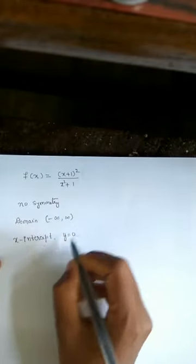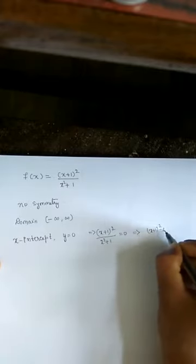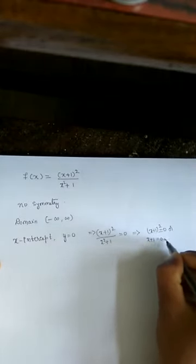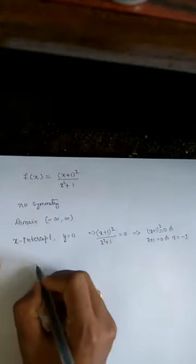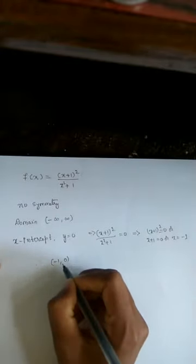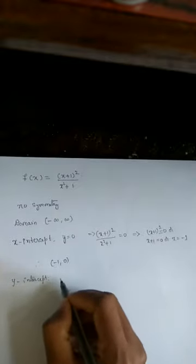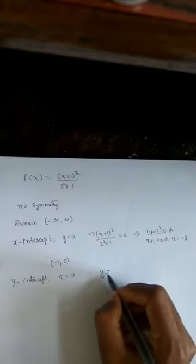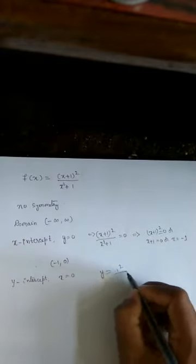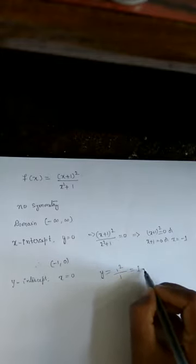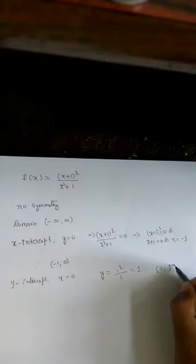Step 3 — x-intercepts: set y = f(x) = 0, so (x+1)²/(x²+1) = 0, which implies (x+1)² = 0, giving x = −1. Therefore the x-intercept is (−1, 0). For the y-intercept, set x = 0: f(0) = (0+1)²/(0+1) = 1/1 = 1. Therefore the y-intercept is (0, 1).